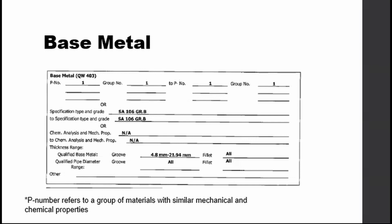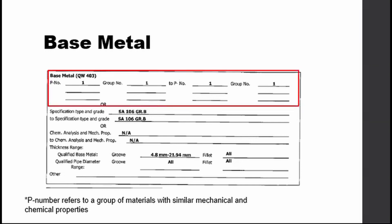The base metal is the part that is to be welded. In all WPS documents there is a P number indicated, which means that the material to be welded belongs to that metal group. This is for economic purposes, as a WPS may not need to be created for other materials that belong to the same P number.